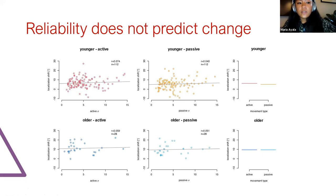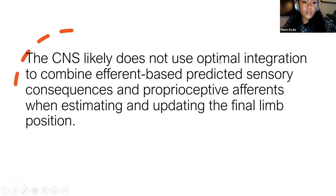And this suggests to us that Bayesian explanations about integration of afferent and efferent signals are not as likely here. So together these findings make it less likely that the CNS combines efferent-based predicted sensory consequences and proprioceptive afferents optimally, at least when estimating the final limb position.